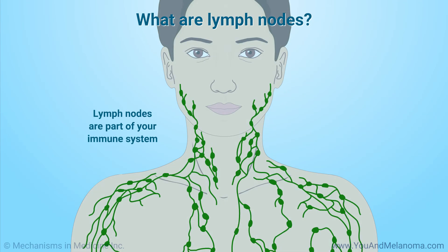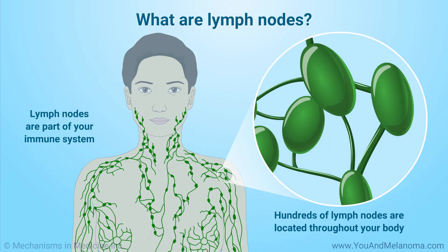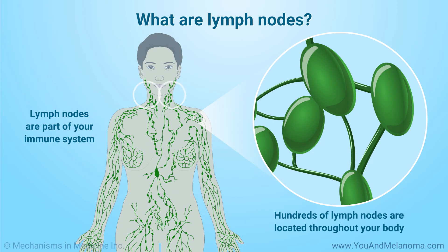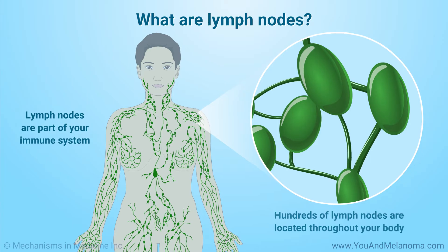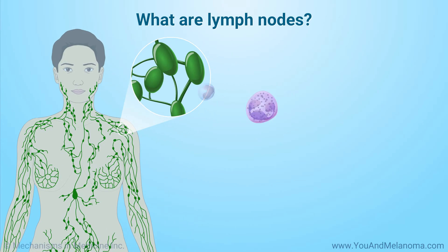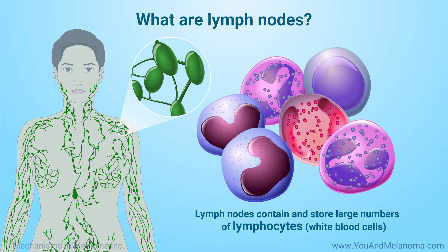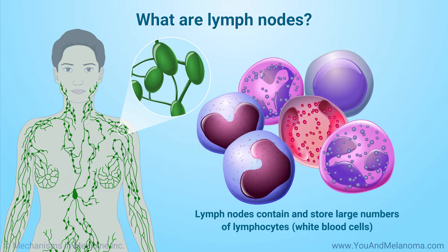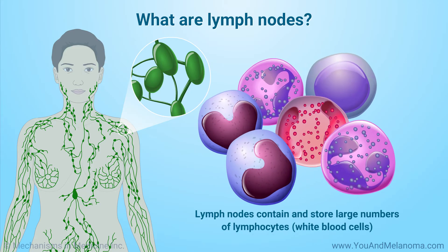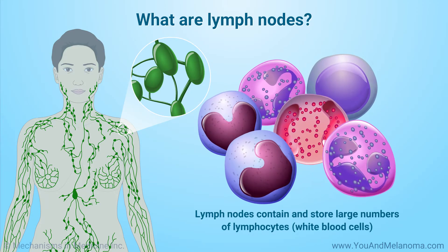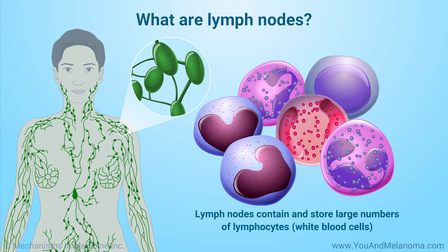Lymph nodes are part of your immune system. Hundreds of them are located throughout your body, with many found in the neck, armpits, elbows, and groin. Lymph nodes are small organs that contain and store large numbers of lymphocytes, white blood cells that help the body fight infection and diseases like cancer.